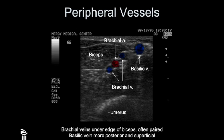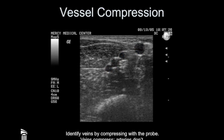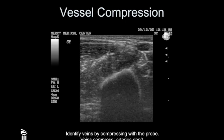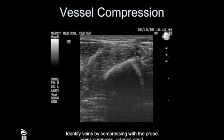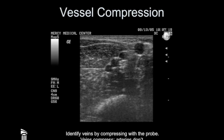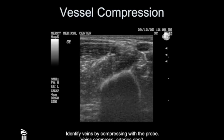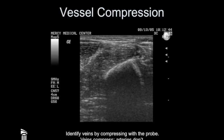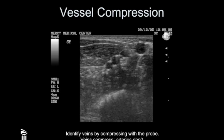How do you tell veins apart from the artery? You just press with the probe, and the one that stays open is the one you don't want to cannulate. It's very easy to compress the veins and extremely difficult to compress the artery, so don't worry about making a mistake and misidentifying the artery for a vein.